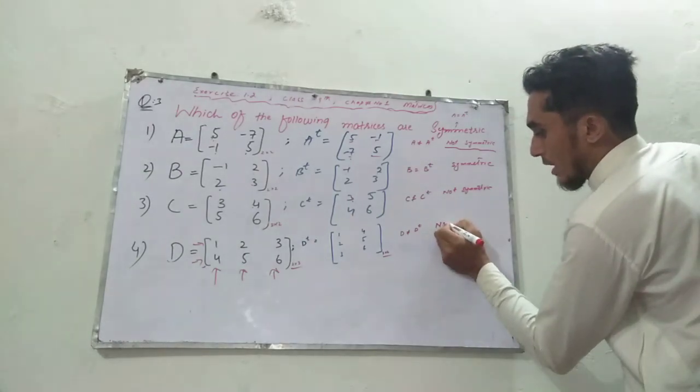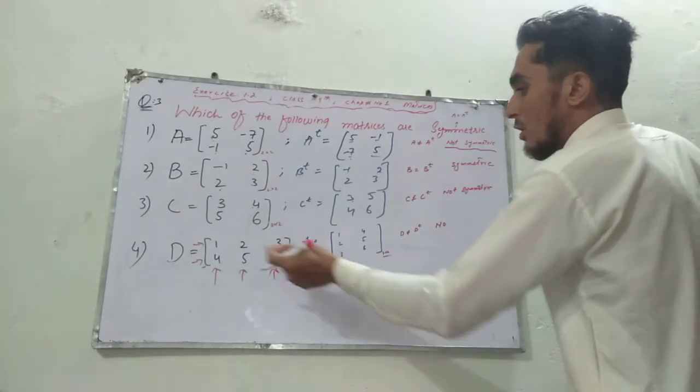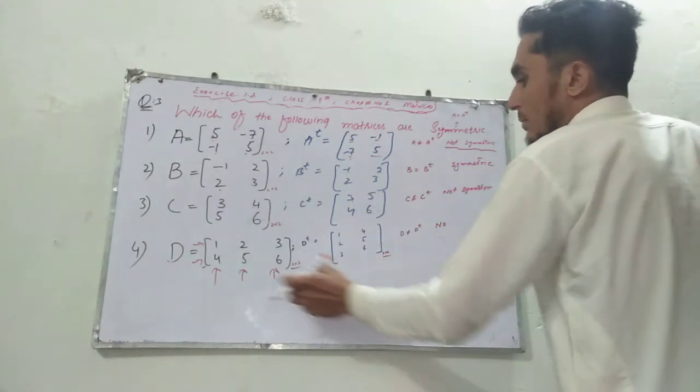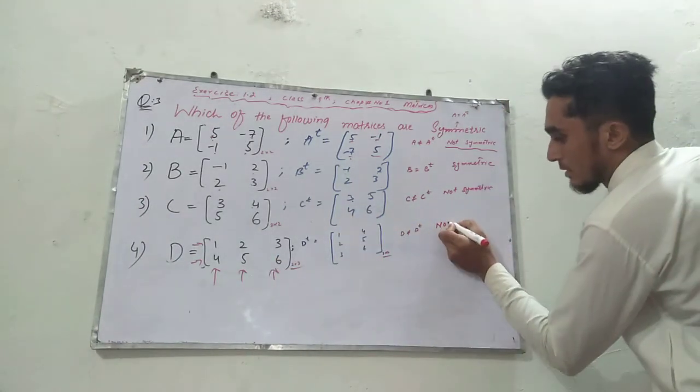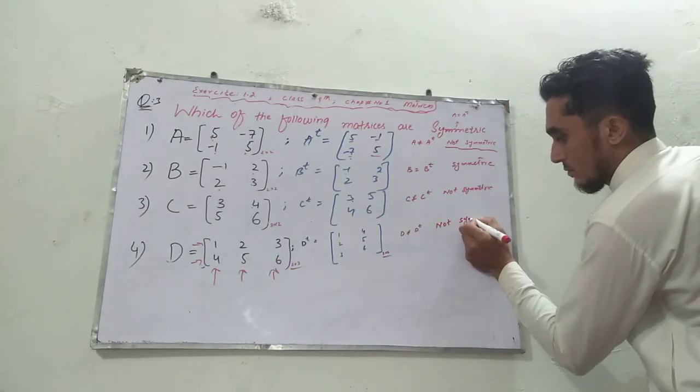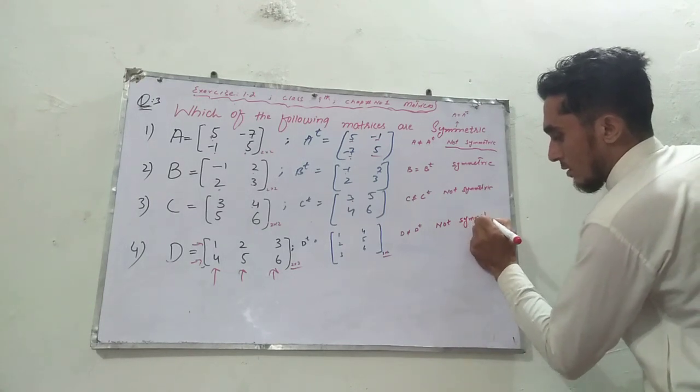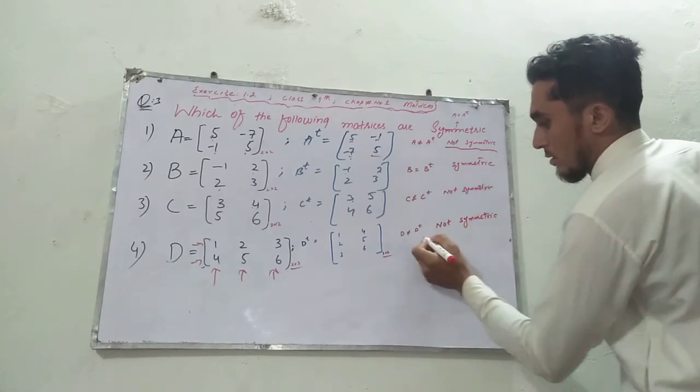Between all the matrices, only B is symmetric. Thank you.